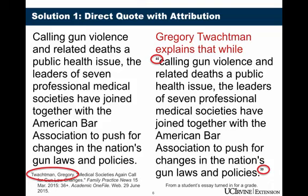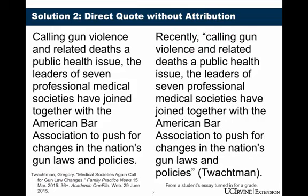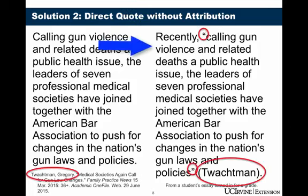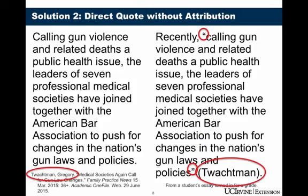The second way to prevent plagiarizing when using someone else's words is to use a direct quote but without attribution. The student does not mention the author's name in the sentence. The student still put quotation marks around all parts borrowed from the original source, but instead of using attribution — that means instead of introducing the author in the sentence — the student put the in-text citation at the end of the sentence in parentheses, before the period. This is also a correct way to give credit to the other source, so here the student is not plagiarizing either.